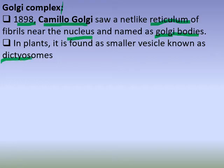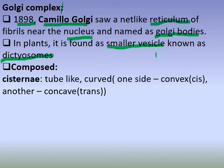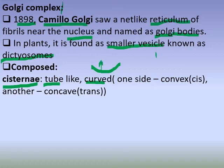This is the Golgi Complex. It is one of the important parts of the cell. If you are looking at the endoplasmic reticulum, you can confirm the vesicles. If you are looking at the Golgi Complex, you can identify the Golgi Complex clearly.